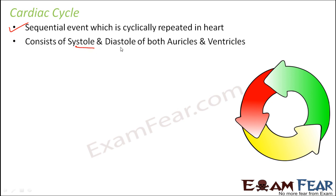The cardiac cycle consists of systole and diastole of both auricles and ventricles. Turn by turn: first the auricles undergo systole, then the ventricles undergo systole, then both are in diastole — again auricles systole, again ventricles systole, again both diastole — and so on. This repeating cycle is the cardiac cycle.